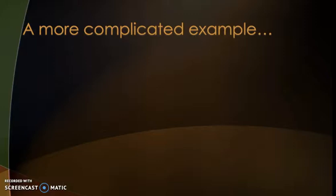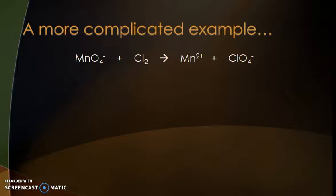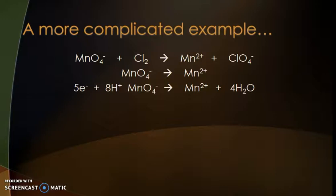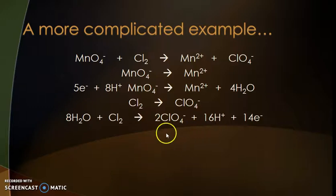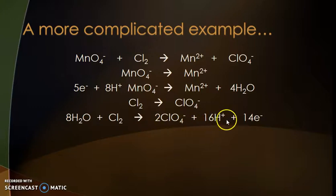Now, just at the extreme end of the scale, this one is quite tricky. We have permanganate and chlorine gas forming Mn2+ and the perchlorate ion. No matter how complicated it is, we do the same process. The permanganate half equation balances exactly as before. For chlorine to perchlorate: we have two chlorines, so we need two perchlorates. That gives 8 oxygens, so we need 8 waters, which gives 16 hydrogens, so we need 16 H+. Finally, to balance the charges, we need 14 electrons.